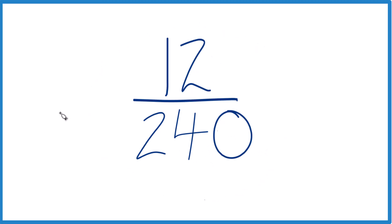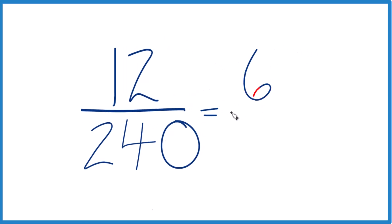So to simplify it, I think rather than writing all the factors out, since these are both even numbers, I'm just going to divide the numerator and the denominator here by 2. 12 divided by 2 is 6, and then 240, 240 divided by 2 is 120.